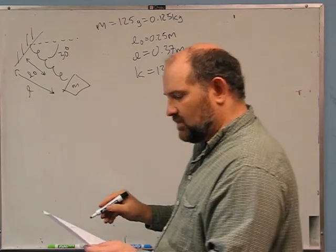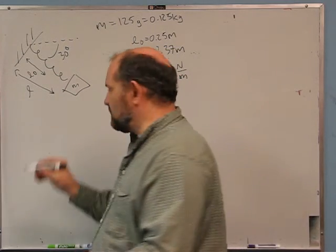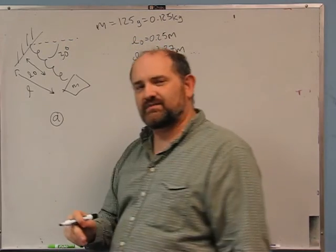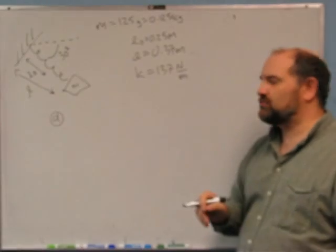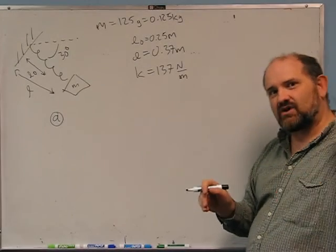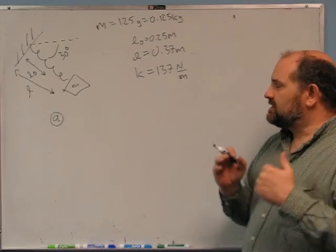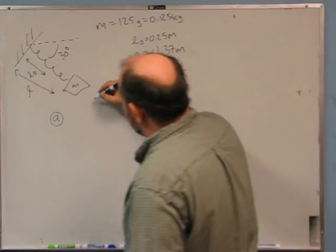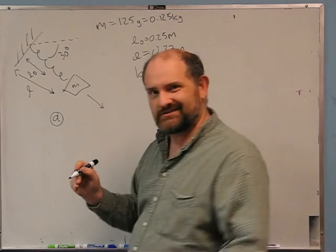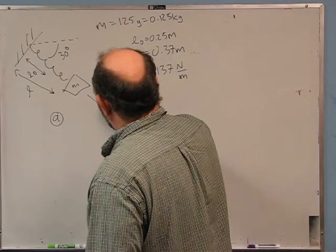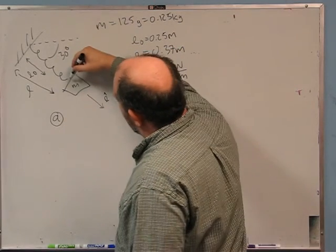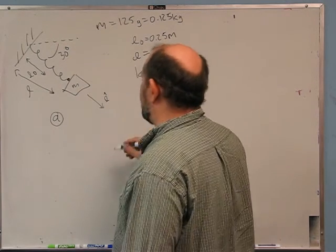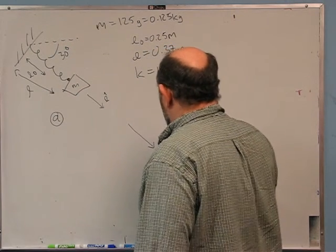Part A: What is the unit vector L-hat pointing along the spring? Remember, L-hat points along the spring towards the end where the thing is connected to the spring.